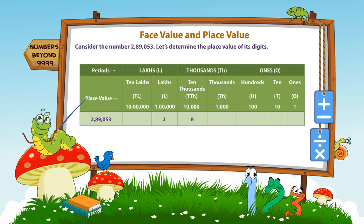that is 80,000. The place value of 9 is 9 thousands, that is 9,000. The place value of 0 is 0 hundreds, that is 0. The place value of 5 is 5 tens, that is 50.